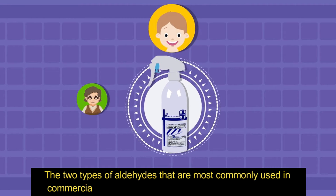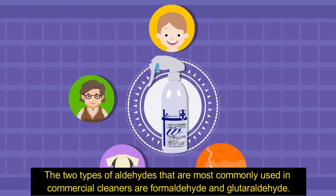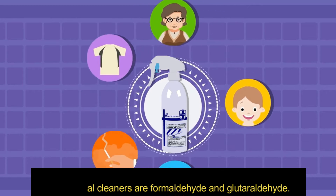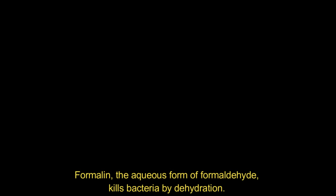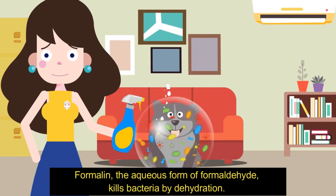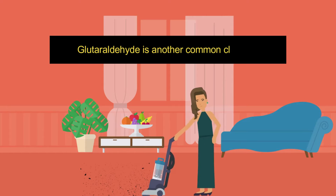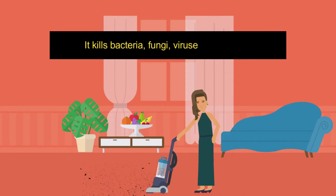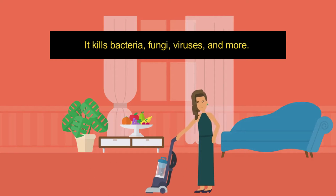The two types of aldehydes most commonly used in commercial cleaners are formaldehyde and glutaraldehyde. Formalin, the aqueous form of formaldehyde, kills bacteria, fungi, viruses, and more. Glutaraldehyde is another common cleaner — it also kills bacteria, fungi, viruses, and more.